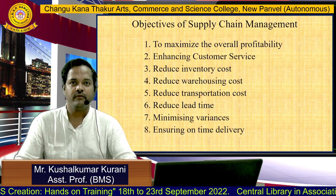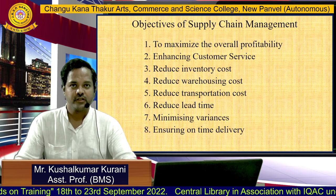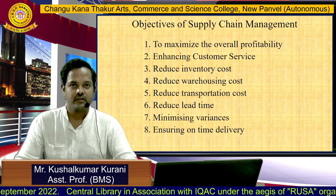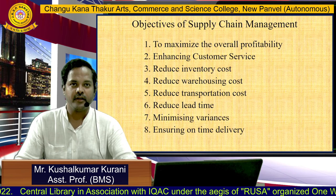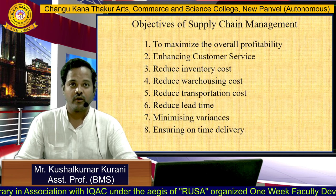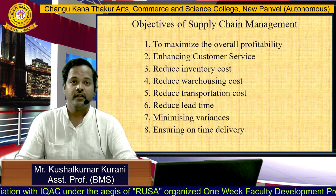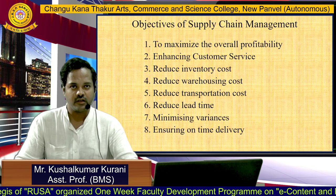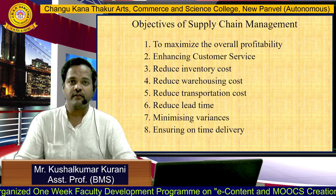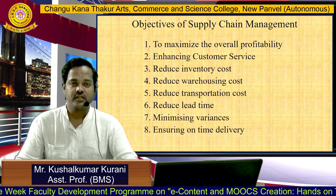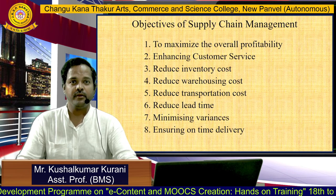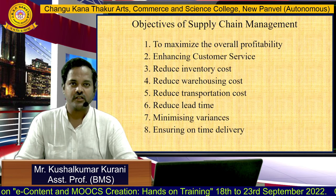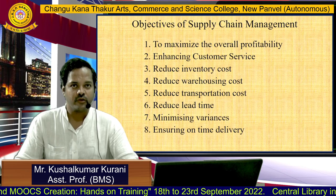Next we will head towards the objectives of supply chain management. First is to maximize overall profitability. In logistics, there are two key things: maximize overall profitability and minimize cost. Initially when we start a business, we have to spend a lot of money, and the cost is high during setup. But at a later stage, the company will start making profit and costs will come down. So for any organization, profitability is one of the key objectives.